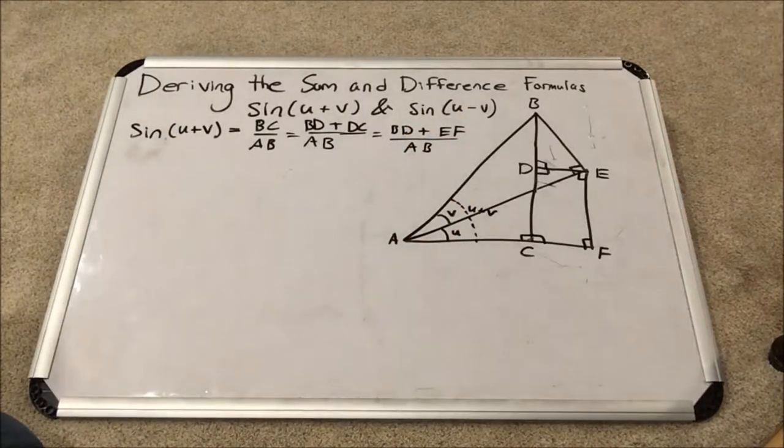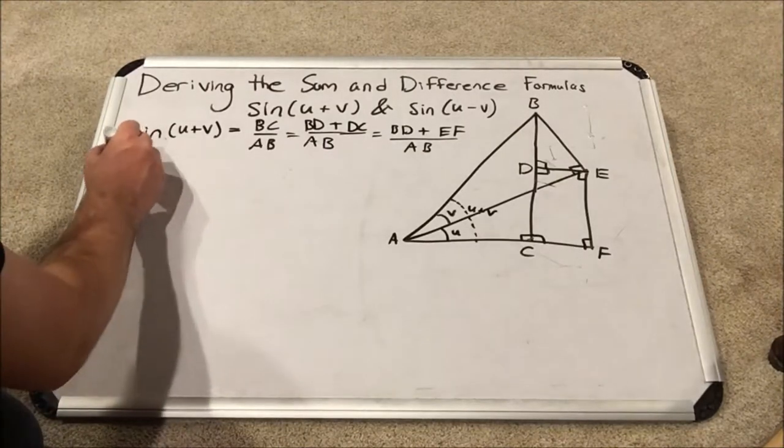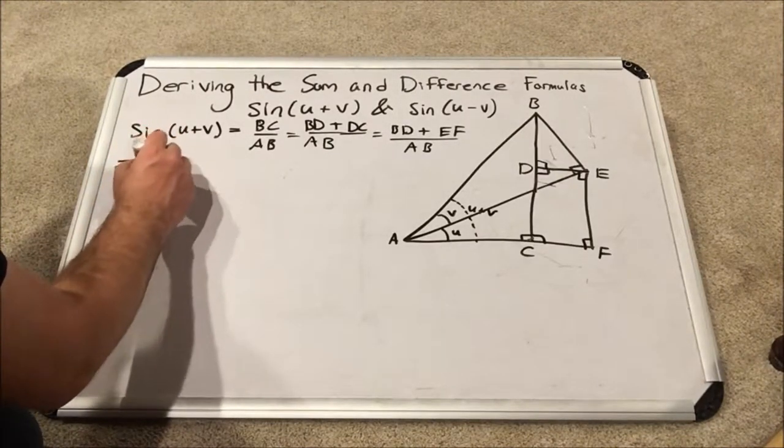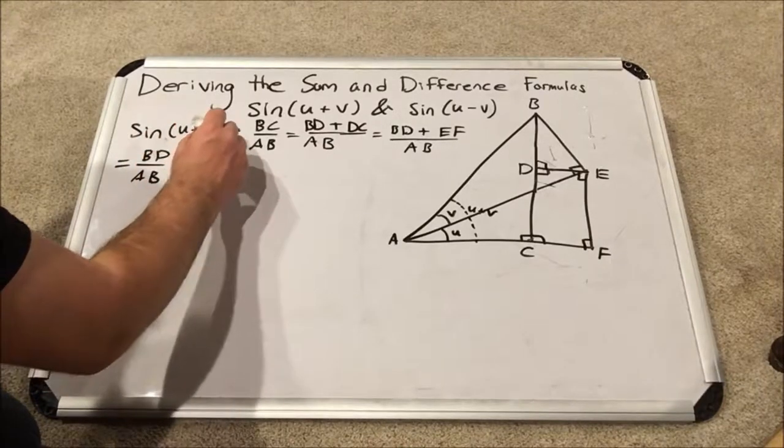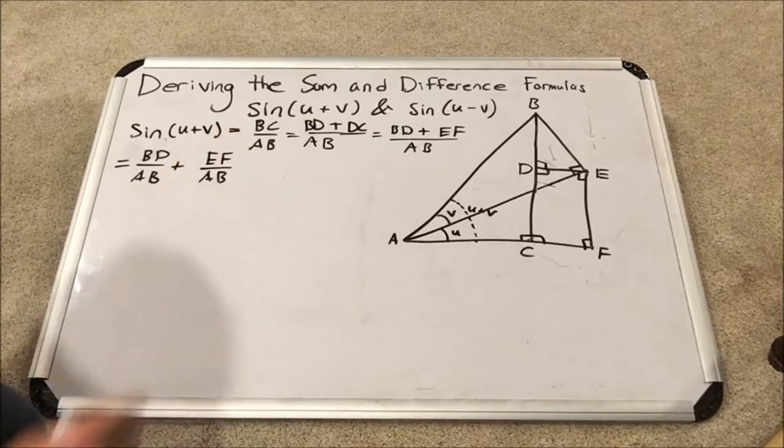So I can rewrite this as BD plus EF all over AB. And finally, what I'm going to do is split this up into two fractions. So now I have BD over AB plus EF over AB.